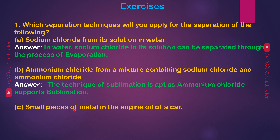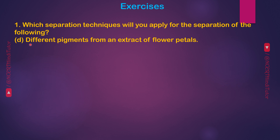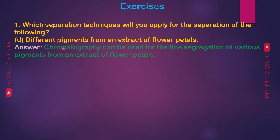C — Small pieces of metal in the engine oil of a car: tiny chunks of metal pieces in the engine oil can be manually filtered. D — Different pigments from an extract of flower petals: chromatography can be used for the fine segregation of various pigments from an extract of flower petals.